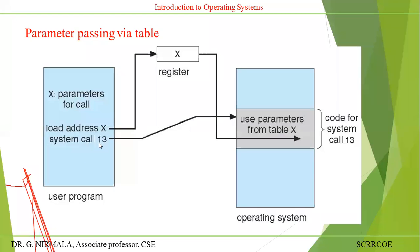The system call will have an identifier — some ID will be there. Based upon that ID, you pass the system call parameters to register X. Use the parameters from table X, and the OS will execute those parameters. Then the value will be returned to the main program. That is the normal execution of any user program and the operating system.